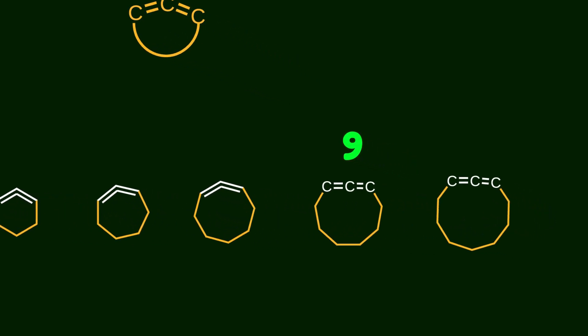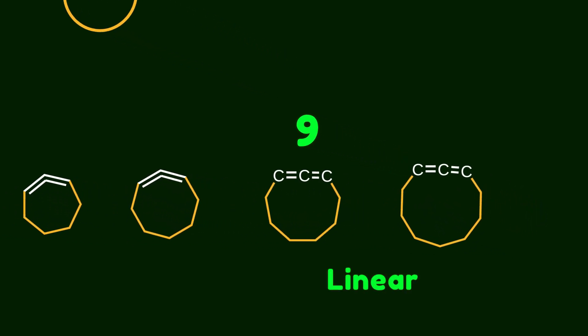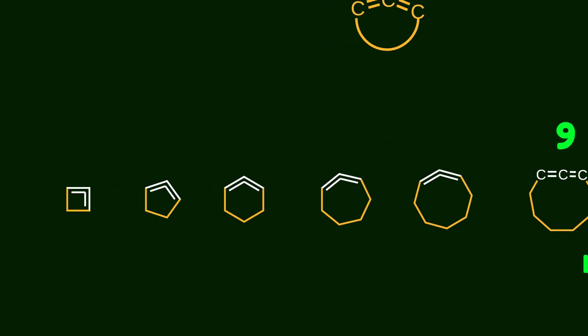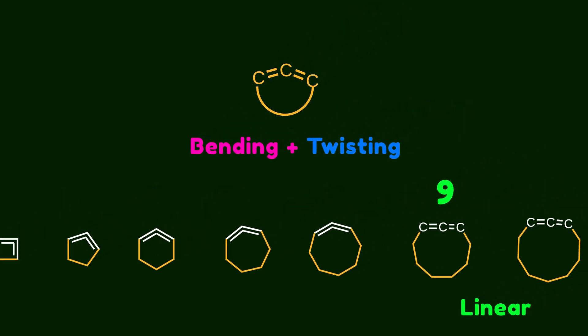Allenes become bent when they are incorporated into rings. Computational studies show that the extent of distortion depends on the ring size. Rings with nine members or more can accommodate a linear allene without significant distortion. But as the ring size decreases, distortion is introduced. Importantly, bending and torsion are coupled motions — a combination of both defines the unique properties of a cyclic allene.